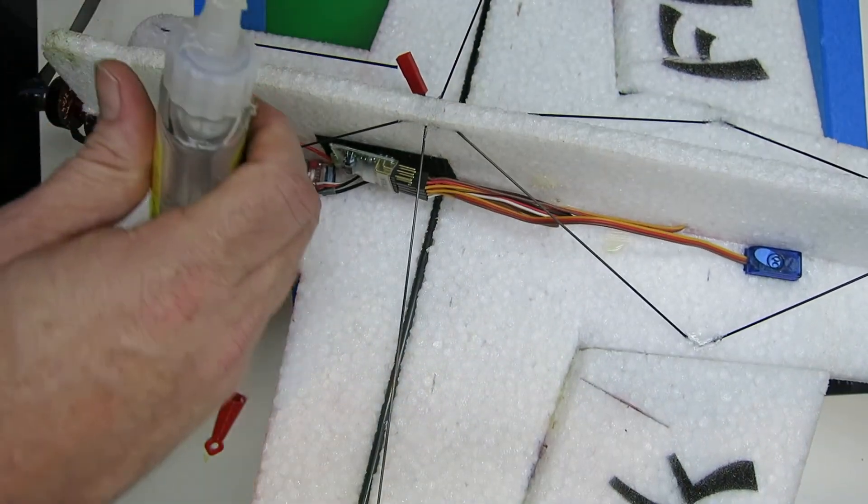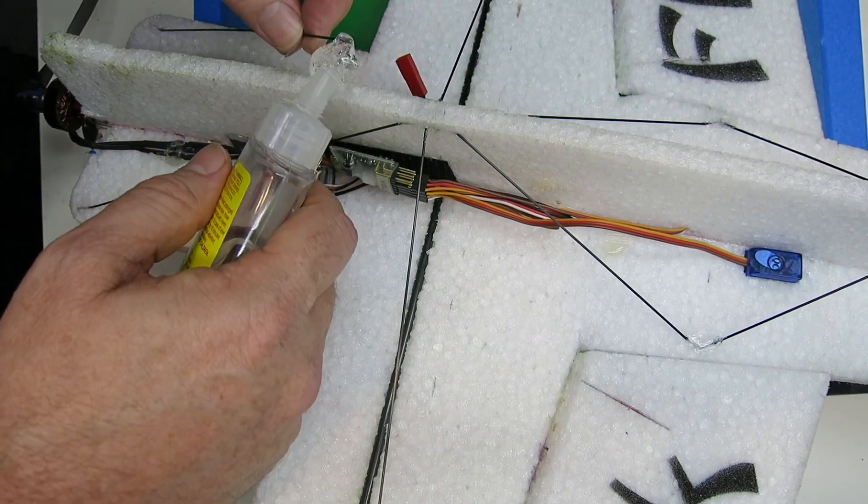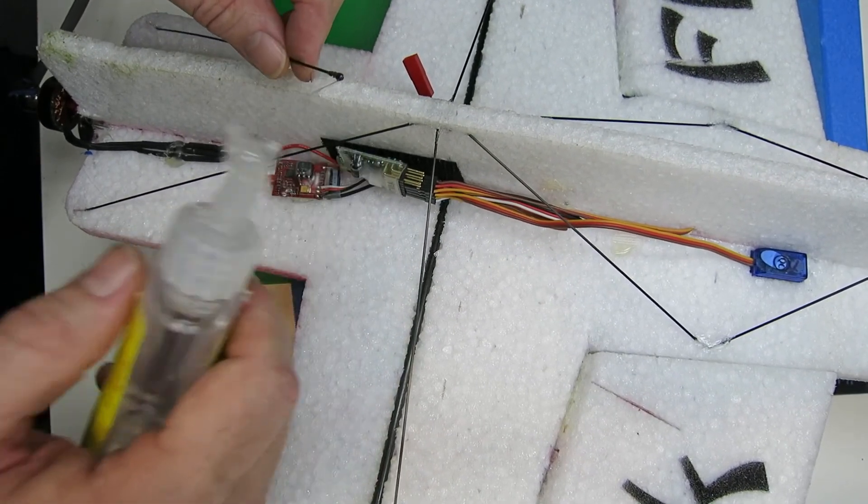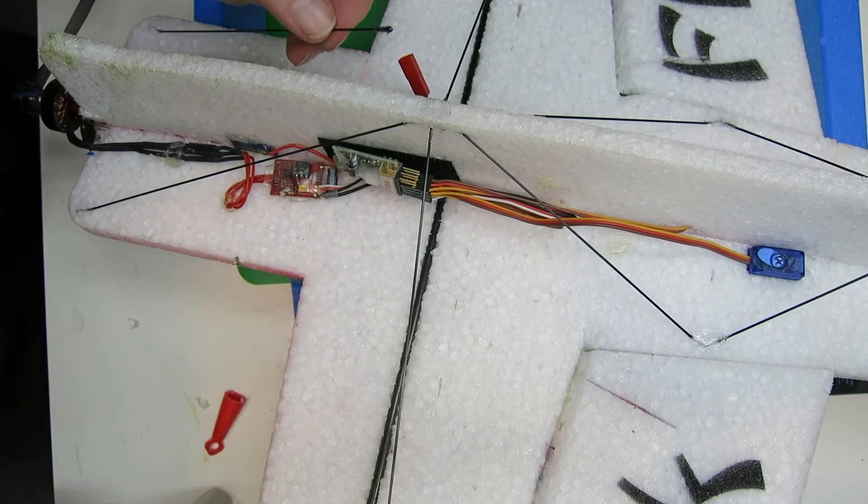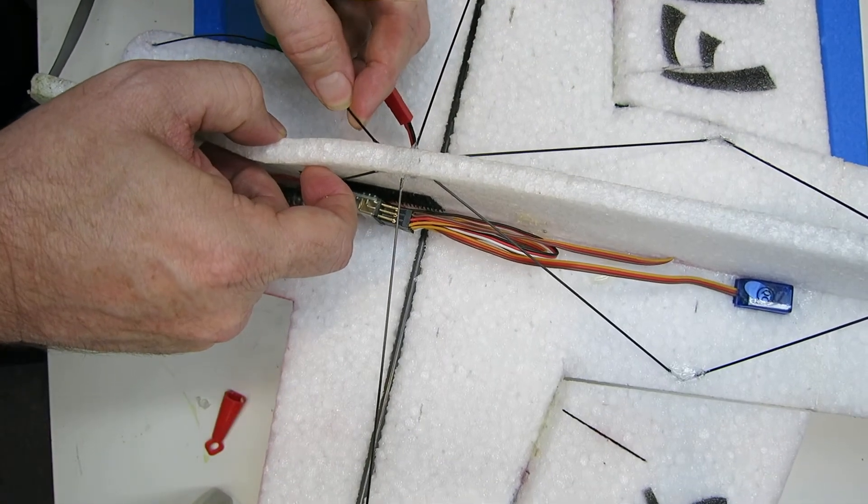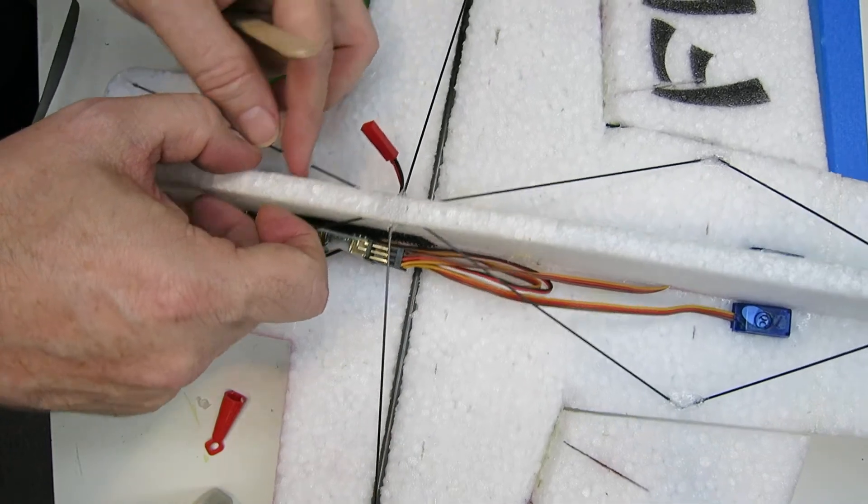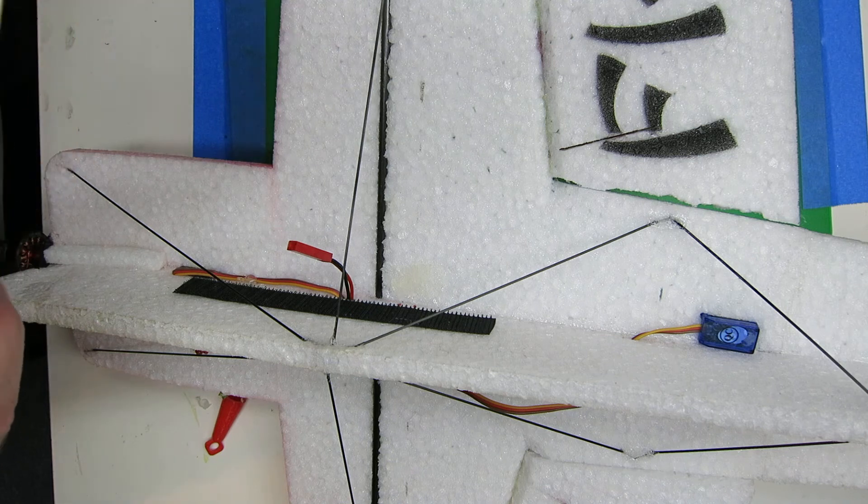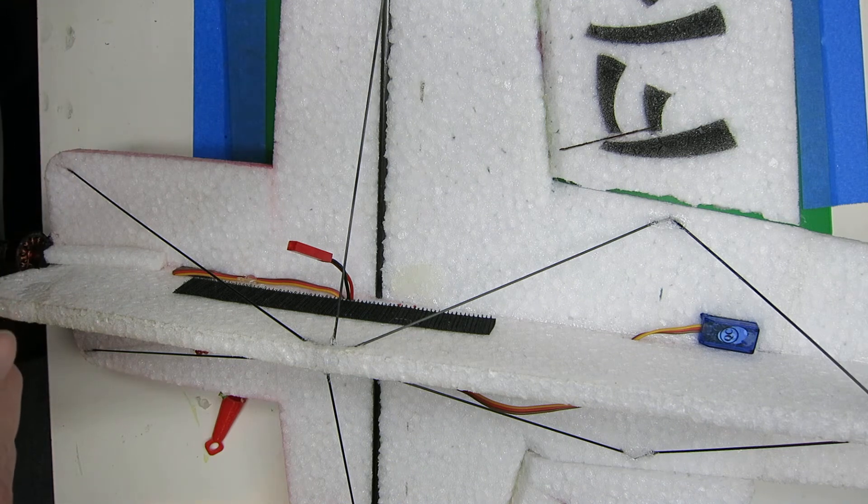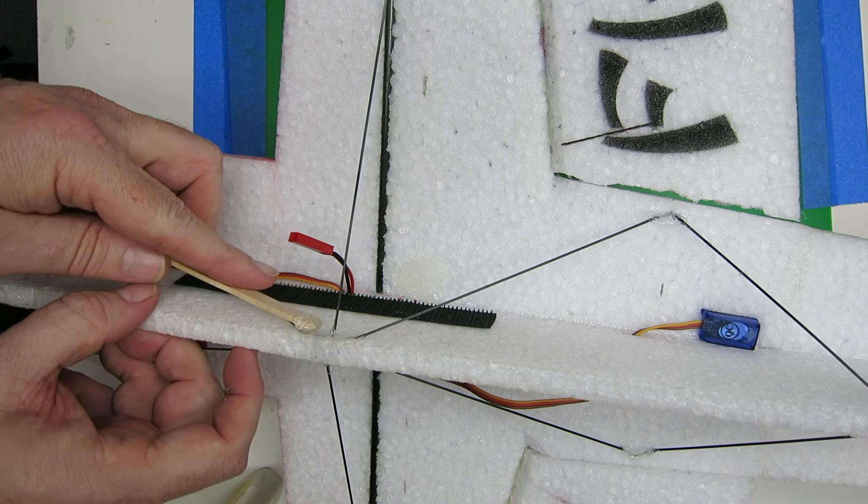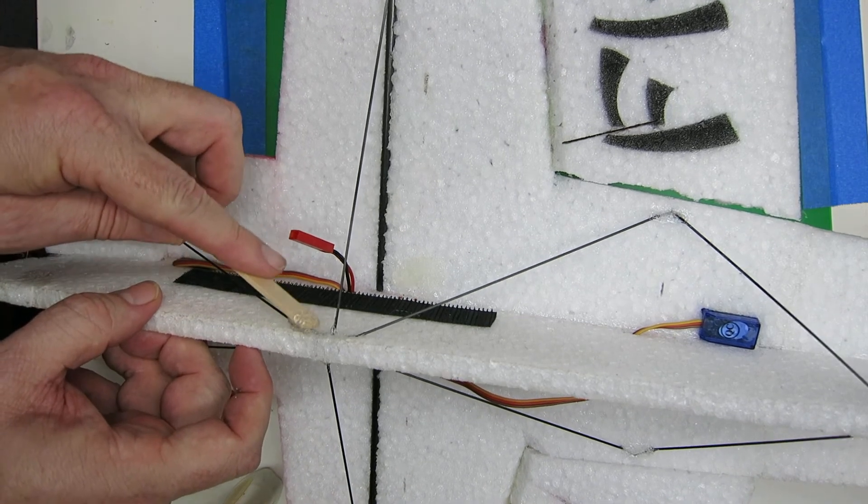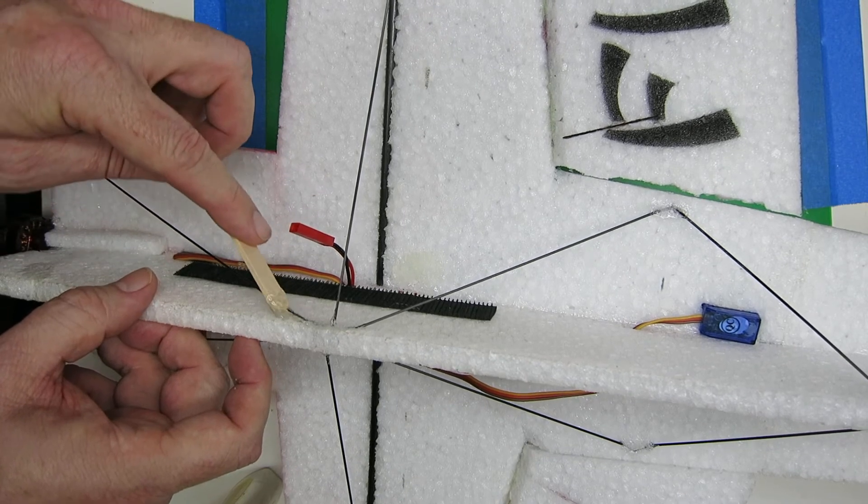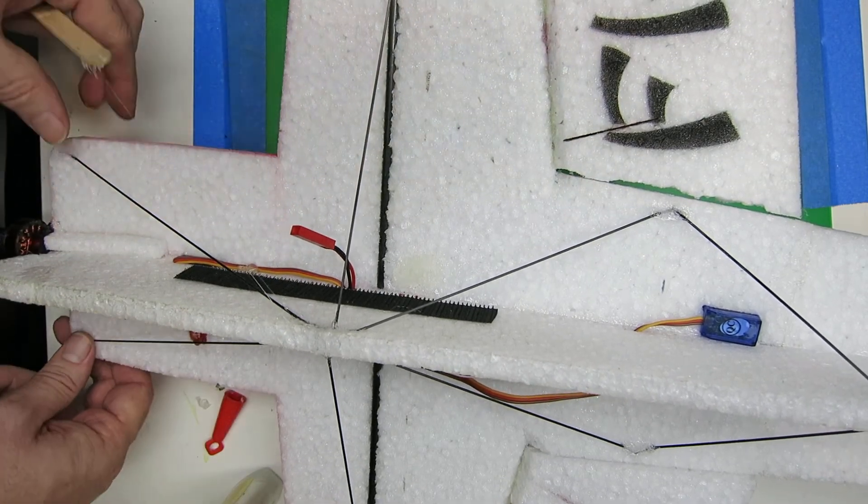Likewise here, get some glue on there, get that into the hole, and then just smear a little bit of glue around the hole to hold it in place. I try not to use too much glue.